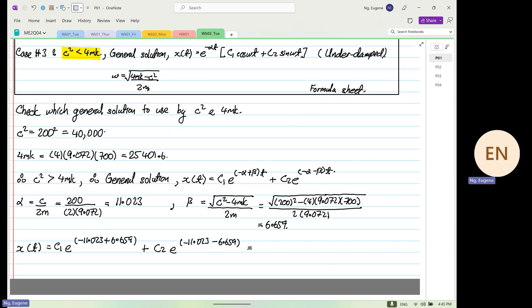So you'll come out to be c1e to the power of minus 4.364t plus c2e to the power of minus 17.682t.